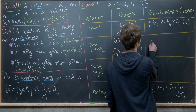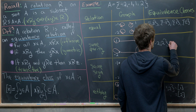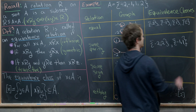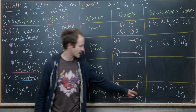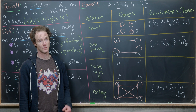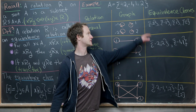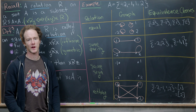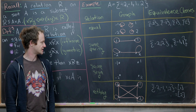We can write the equivalence classes as {negative two, two} and {negative one, one}. This splits the set into two equivalence classes. Whereas the universal relation split the set into just one class — too coarse a filter — equality was too fine. The parity relation is getting towards a more interesting filter, depending on the context.